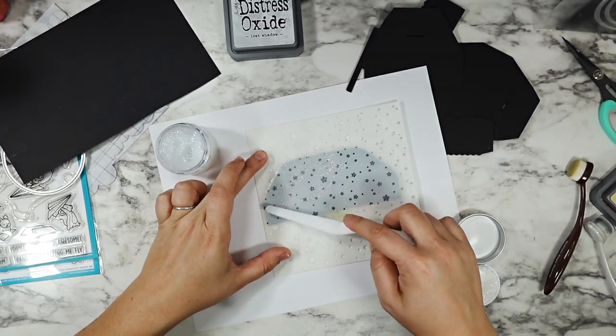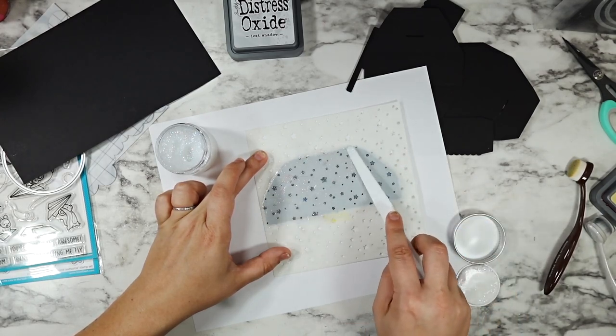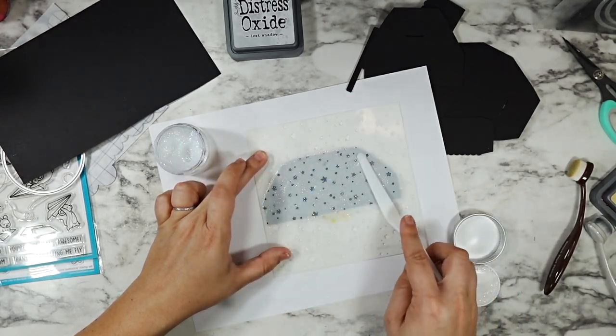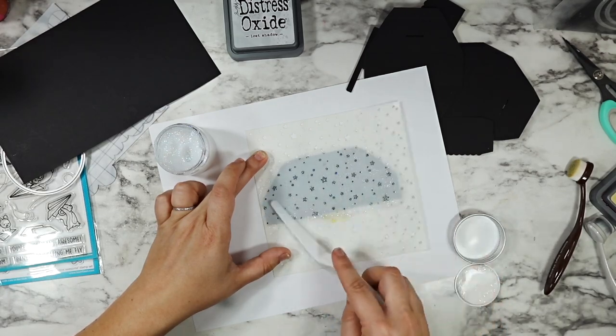And then I'm going to go over this without moving my stencil using this Burtis Monroe glitter paste. I love this stuff. It's just a really beautiful iridescent glitter paste and I'm layering it over that light gray so that we get a little color and a little shine.